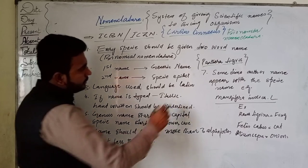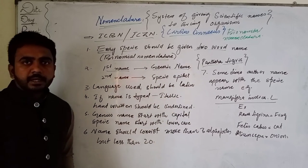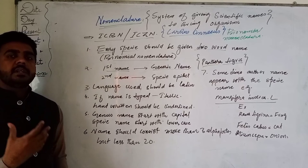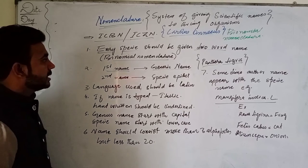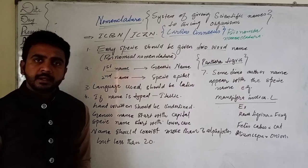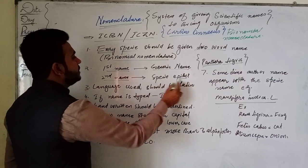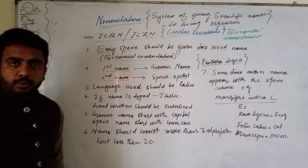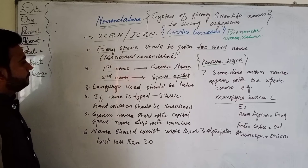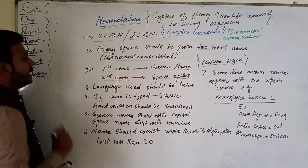Out of these two words, the first name shows the generic name, i.e., the genus of that particular organism. For example, in Panthera tigris, 'Panthera' shows the genus of the tiger, and 'tigris' is the particular species name or species epithet. The first rule is every species should have a two-word name, and the second rule is that the first name is the generic name and the second is the species epithet.